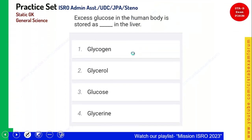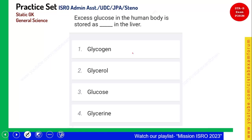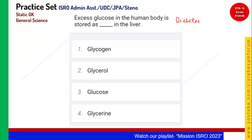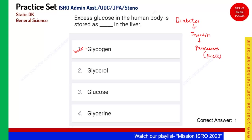Excess glucose in the human body is stored as dash in the liver. Excess glucose is referred to a condition called diabetes, which is due to lack of production of a hormone called insulin. Insulin is released in the pancreas — specifically by beta cells — which control the glucose level in the human body. If there is excess glucose, it is stored as glycogen in the liver. Option A is the right answer.